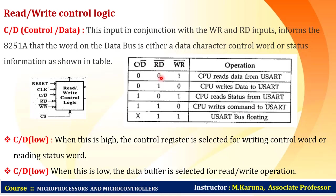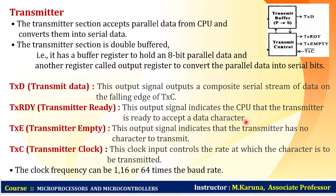If C/D-bar is 0, data transfer operation is performed. If C/D-bar is 1, it relates to status and command words. When read-bar is 0 and C/D-bar is 0, the processor reads data from USART. When read-bar is 0 and C/D-bar is 1, the processor reads status from USART. When write-bar is 0 and C/D-bar is 1, the processor writes the command to the USART. When both bits are 1,1, there is no operation.